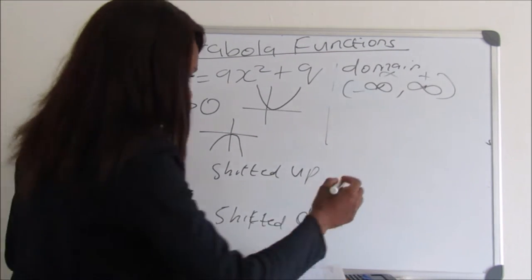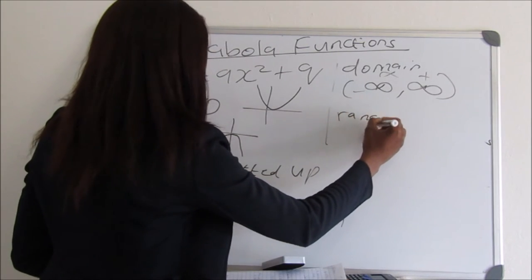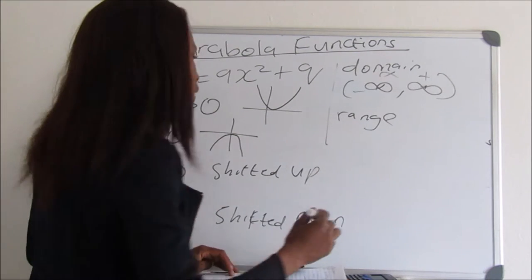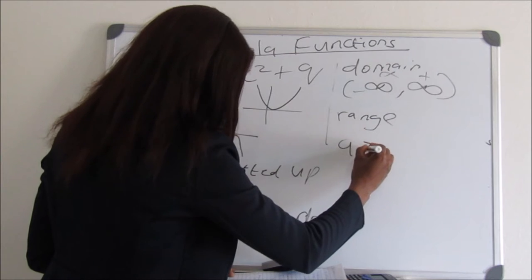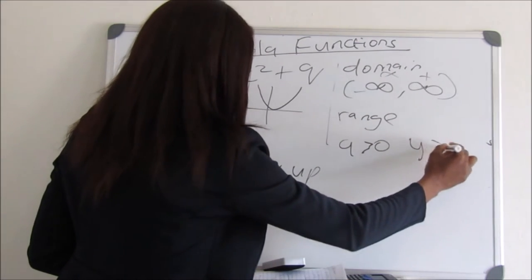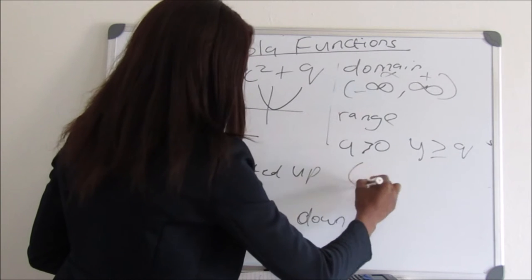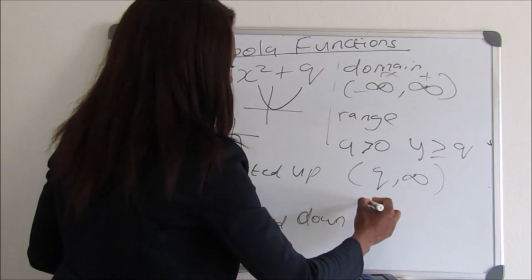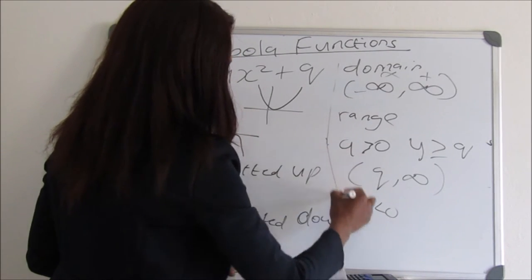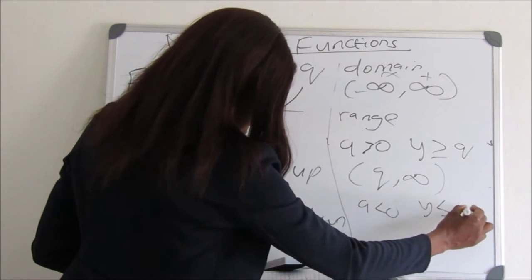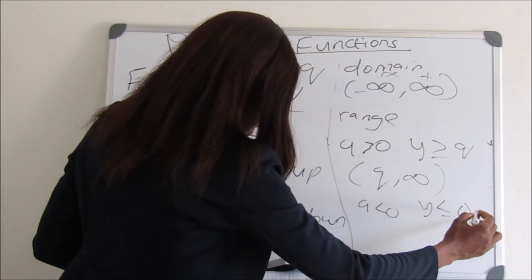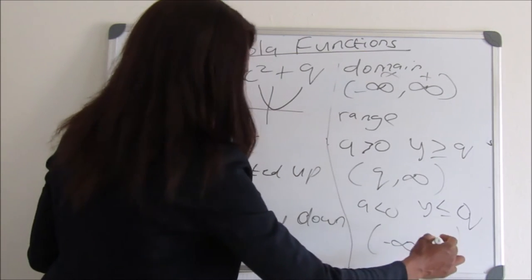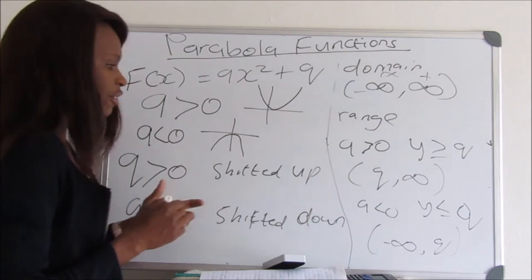Our range defines the possible y values. If a is greater than zero and y is greater than or equal to q, then our range will be [q, positive infinity). If a is less than zero and y is less than or equal to q, then our range will be (negative infinity, q].